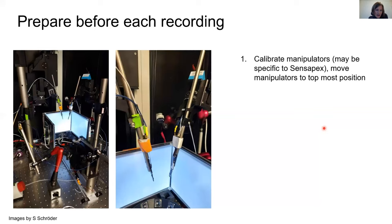Before each recording, you do the following. First, we used to calibrate the manipulators. This may be specific to Sensapex, but probably it's the same for lots of manipulators. Then you position them at the topmost position. Then you place the probes into the manipulators. You could do this before, but for the calibration, the manipulator actually moves around, so it's more likely that you have collisions between the probes. So I would do it before placing the probes into the manipulators.